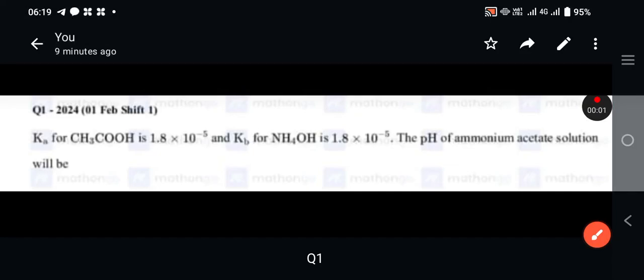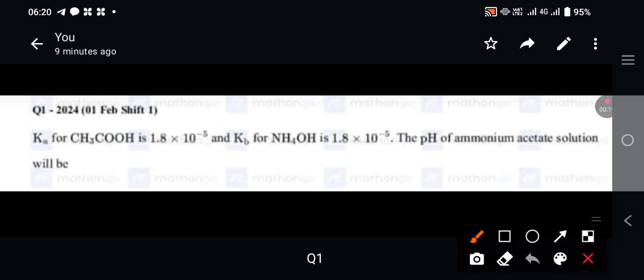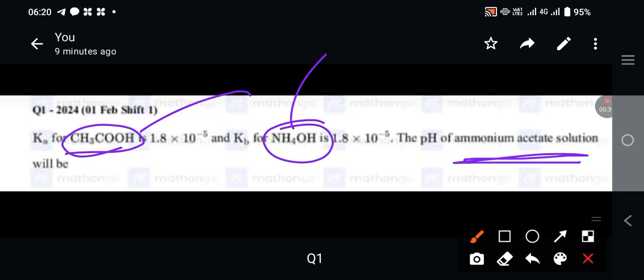Ka for CH3COOH is 1.8 × 10^-5 and Kb for NH4OH is 1.8 × 10^-5. The pH of ammonium acetate solution will be - okay, so this is a question of ion equilibrium. This one is a weak acid and this one is the weak base, so it is a salt hydrolysis problem. Ammonium acetate solution.